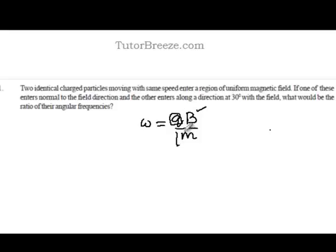The charge to mass ratio is different for different particles. For instance, if you have a proton or an alpha particle, the charge to mass ratio would be different. So the angular frequency does not depend on the velocity.